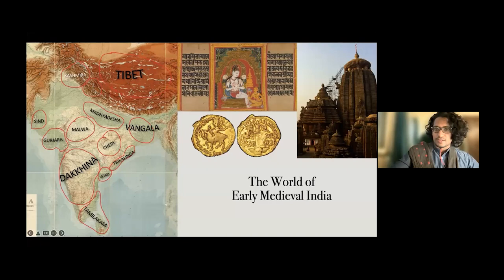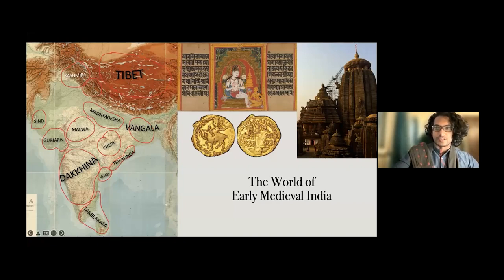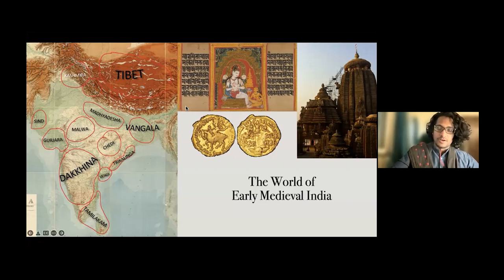This coin of the Rashtrakuta Emperor Govinda III has interesting geometric shapes inspired by Arabic script, because the Rashtrakutas traded extensively with the Arabs — possibly indicating a global outlook on behalf of the Rashtrakuta king. Finally, this magnificent shrine built in Odisha in the 12th century gives you a sense of the sheer architectural and engineering abilities of the polities of this time. Even though it plays very little role in our understanding of India, the early medieval period is one of the most culturally, politically and economically fertile periods.